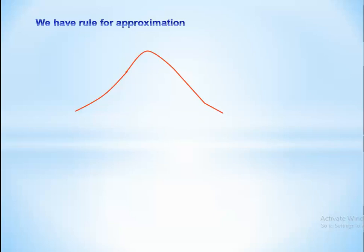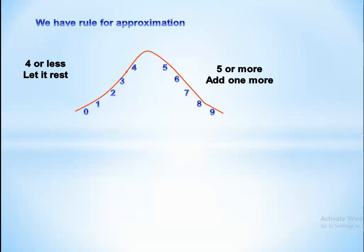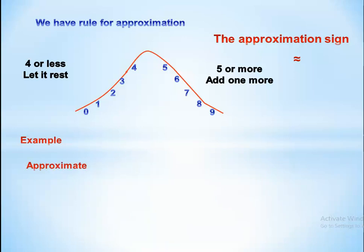If we have digits from 0 to 4 — 4 or less — we will let the number rest. If we have digits from 5 to 9 — 5 or more — we add one more to the number. The approximation sign looks like this. Example: approximate 2.36 to the nearest whole number.